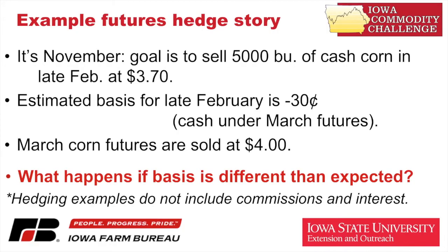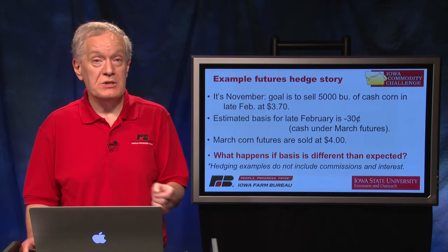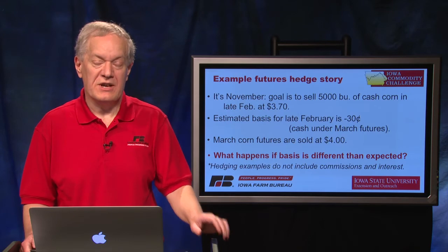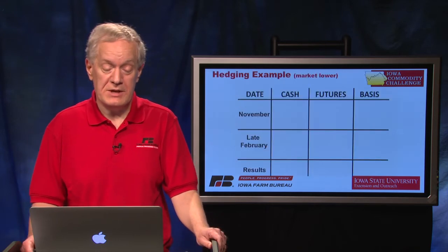Let's see what happens to this hedging position if the basis is different than what we expected at the beginning. We're expecting $0.30 under — let's move that basis so it'll affect the net hedge and show the importance of a good basis estimate. By the way, hedging examples and all the options examples don't include commission and interest on margin, so there'd be a slight difference in these results. We just like to keep the math simple in these presentations.